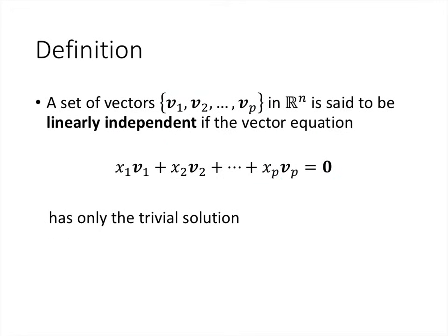So now let's get to the definition. If we have a set of vectors v1 through vp, all living in Rn — so that just means those vectors have n entries — we say that this set of vectors is linearly independent if that homogeneous vector equation only has the trivial solution. So if setting all of the x's equal to 0 is the only way to make the left-hand side equal the right-hand side, then we say that the vectors were linearly independent.